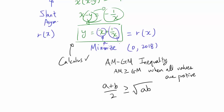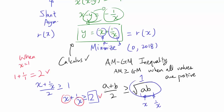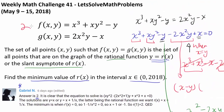For two terms, AM-GM states that (a plus b) over 2 is greater than or equal to the square root of ab. In our case a is x and b is 1 over x, and a times b simplifies to 1. So (x plus 1 over x) over 2 is greater than or equal to 1, meaning x plus 1 over x is greater than or equal to 2. When x equals 1, we get 1 plus 1 over 1 which is indeed 2, so this minimum is achieved. We conclude that 2 is the minimum value of r(x) on the interval (0, 2018), and the answer to challenge 41 is 2.